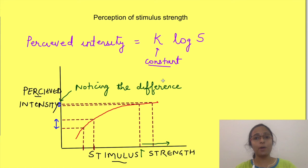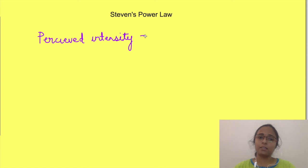However, Fechner's law was found to be applicable for only very high and very low intensities of stimulus. So this equation was further modified by Stevens as power law, which states perceived intensity equals k times stimulus strength to the power of n. This n varies for various stimuli.